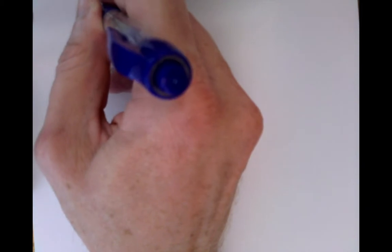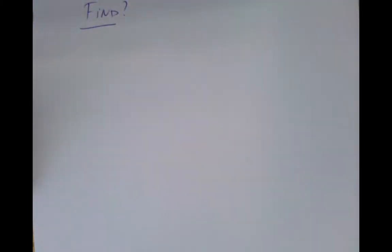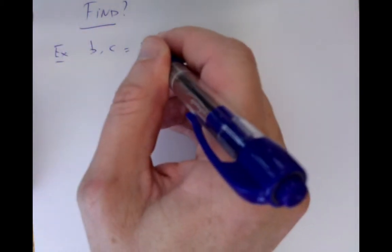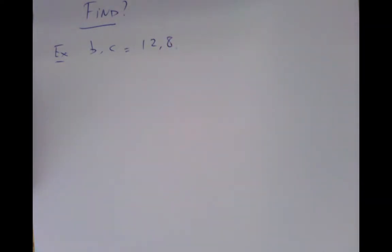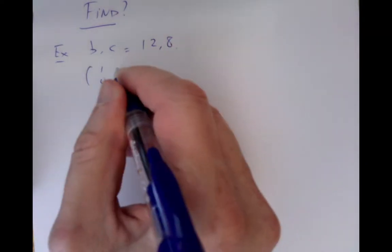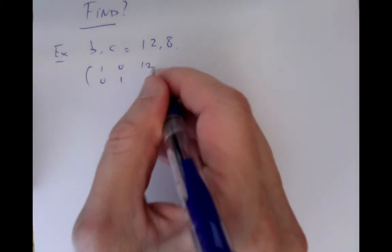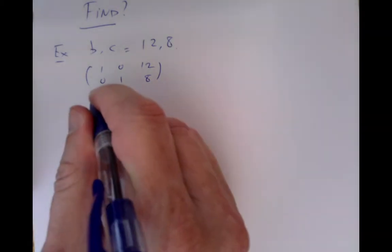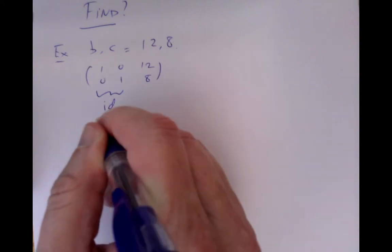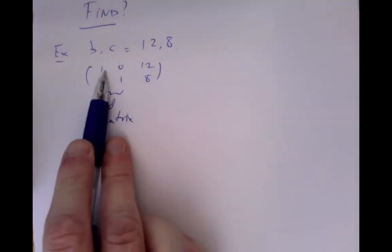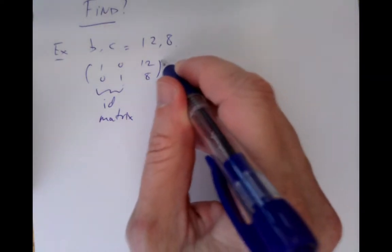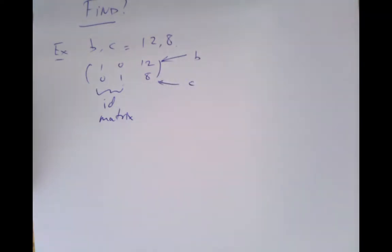So we want to actually find Bezout coefficients. Let's start off with a very simple example: b and c will be just 12 and 8. We put them into a matrix. It's a very simple trick, very similar to linear algebra when you learned about Gaussian elimination. We always put the identity matrix in here — a 2 by 2 identity matrix, always 1, 0, 0, 1 — and then the two numbers b and c. We just put them into a matrix like that, and then we're going to do some row operations on this matrix.